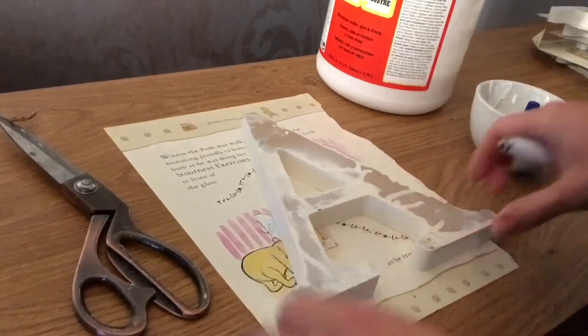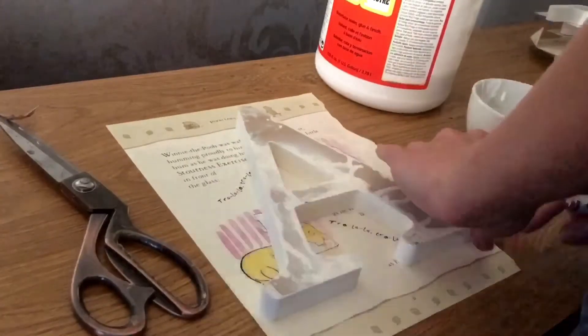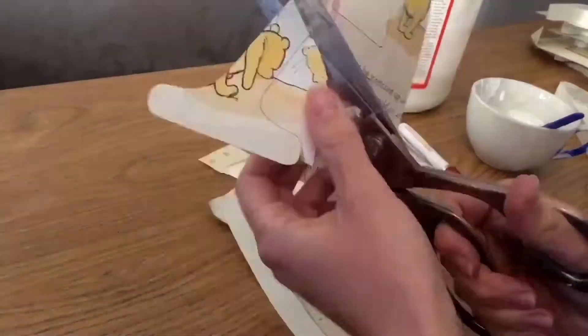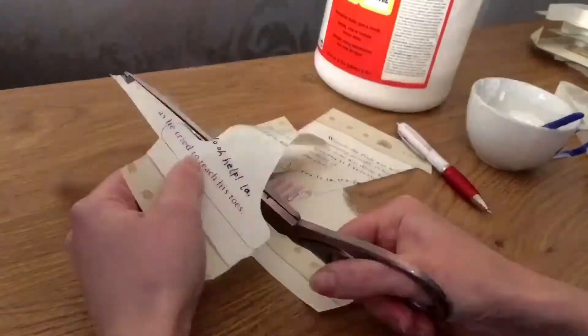You want to start by tracing the outline of the letter onto the paper, fitting in the picture that you want on the front of the letter. Then cut out the template that you've just drawn.